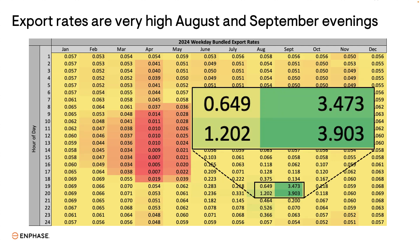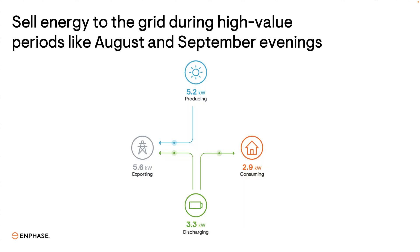During these high value periods, your Enphase energy system can discharge your battery at full power and send a lot of energy to the grid to earn you substantial credits. These credits accumulate during this two-month window and are applied to charges you have in future months when you buy energy from the grid.